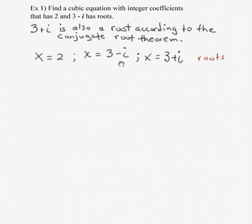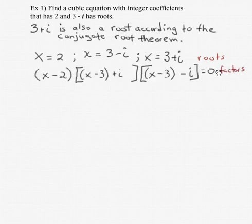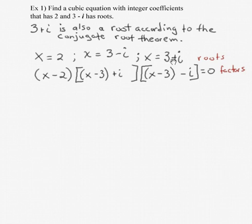To list them: x equals 2, x equals 3 minus i, x equals 3 plus i — those are my three roots. We're going to use the zero product property backwards. So x minus 2 is a factor. Bringing 3 minus i over with the x gives x minus 3 plus i as the second factor. Bringing the 3 plus i over gives x minus 3 minus i as the third factor.